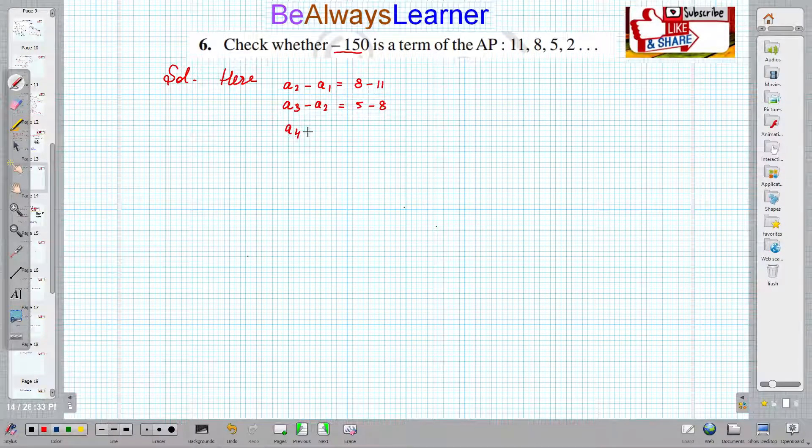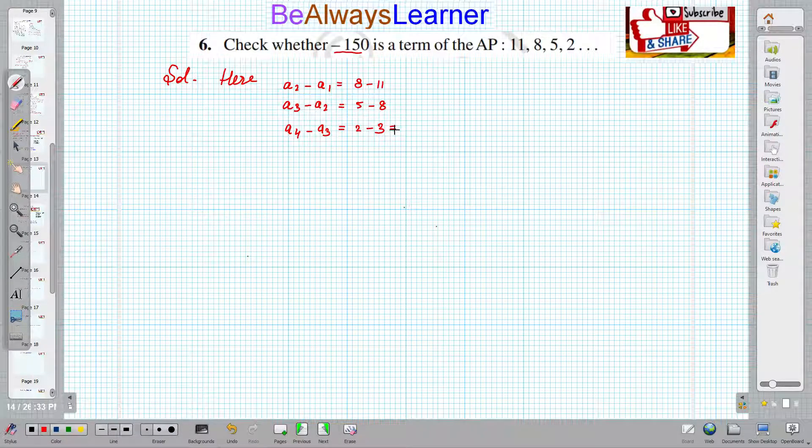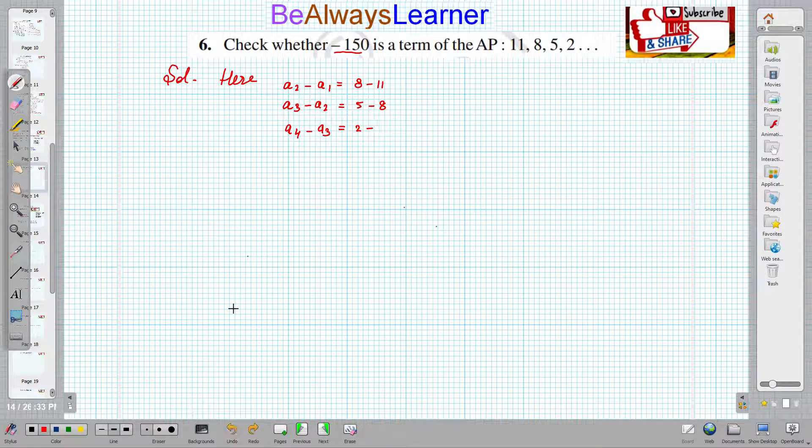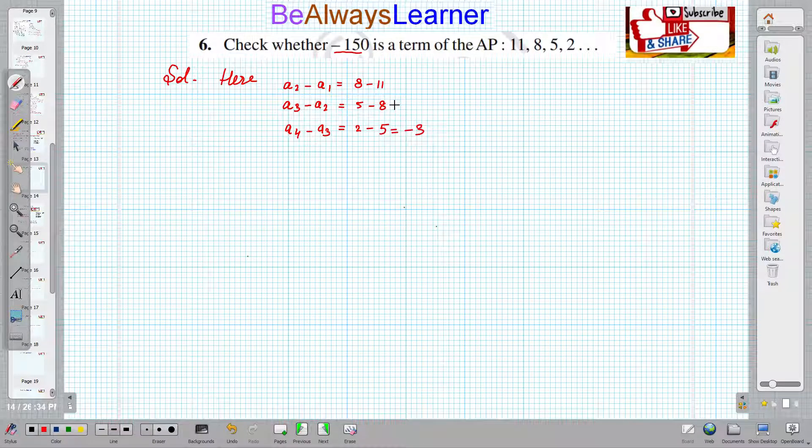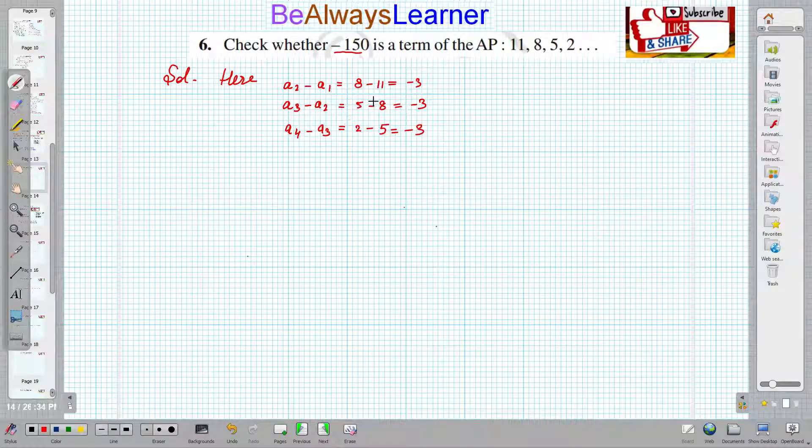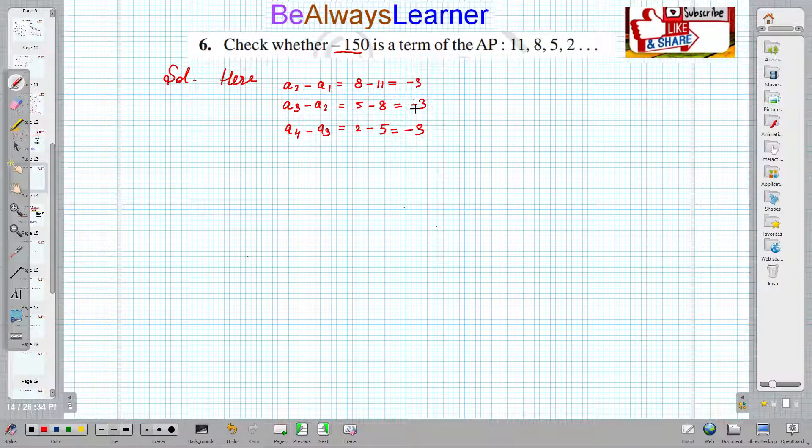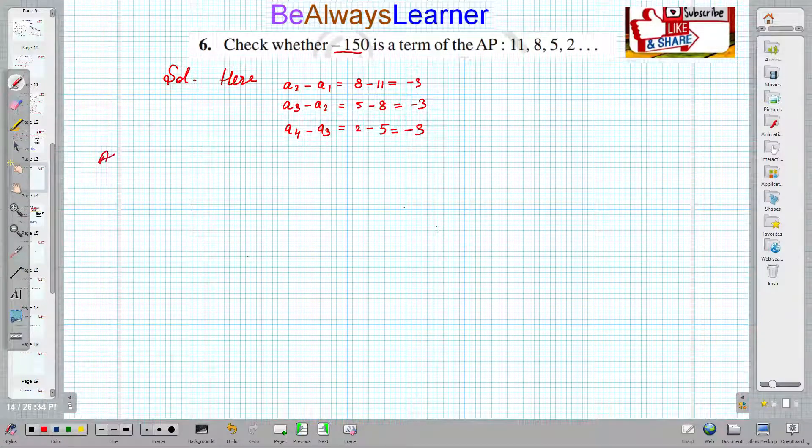We can test the fourth term minus third term, which is 2 minus 5. So this comes out to be minus 3, this is minus 3, this is minus 3. So what does this tell us? That the difference is the same, so the sequence is an AP.